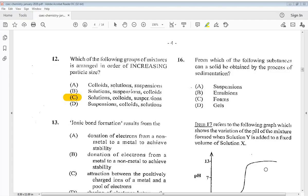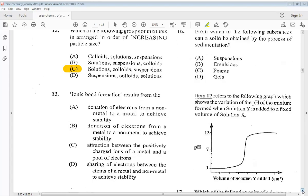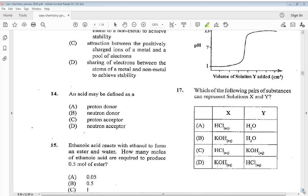13. Ionic bond formation results from: A. Donation of electrons from a non-metal to a metal to achieve stability, B. Donation of electrons from a metal to a non-metal to achieve stability, C. Attraction between the positively charged ions of a metal and a pool of electrons, D. Sharing of electrons between the atoms of a metal and non-metal to achieve stability. So the answer is B. 14. An acid may be defined as a: A. Proton donor, B. Neutron donor, C. Proton acceptor, D. Neutron acceptor. Now, the answer for 14 would be A.